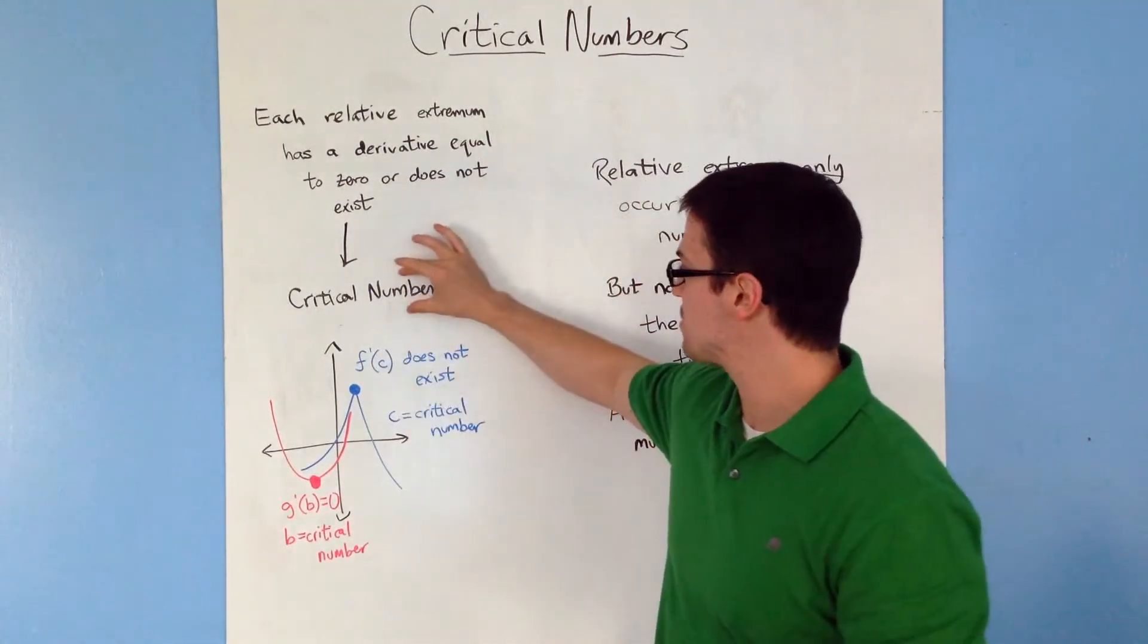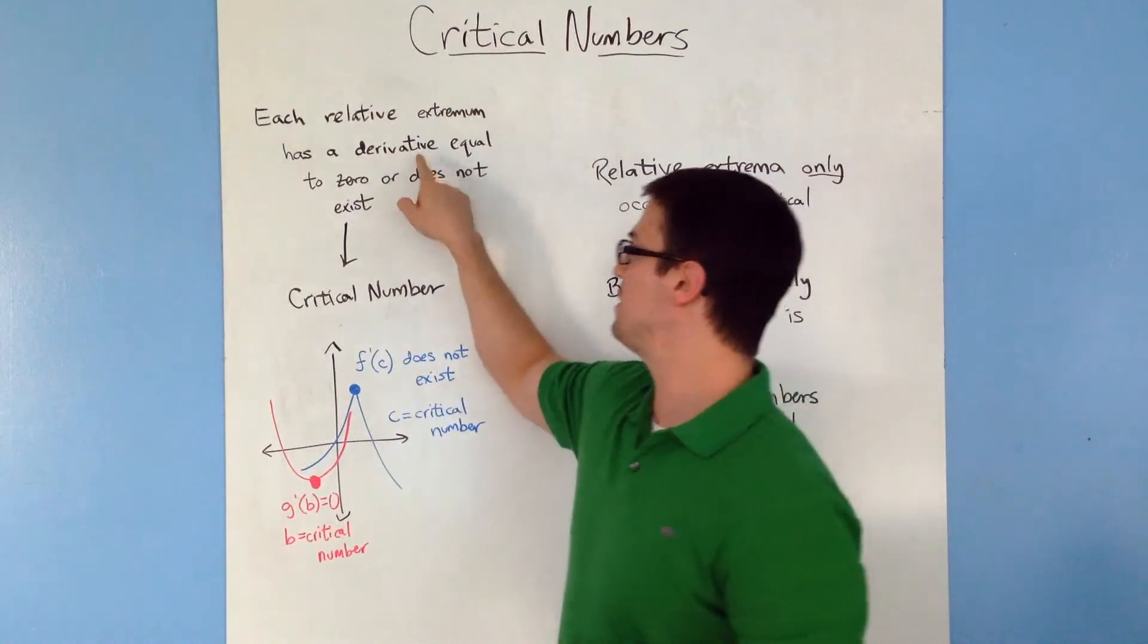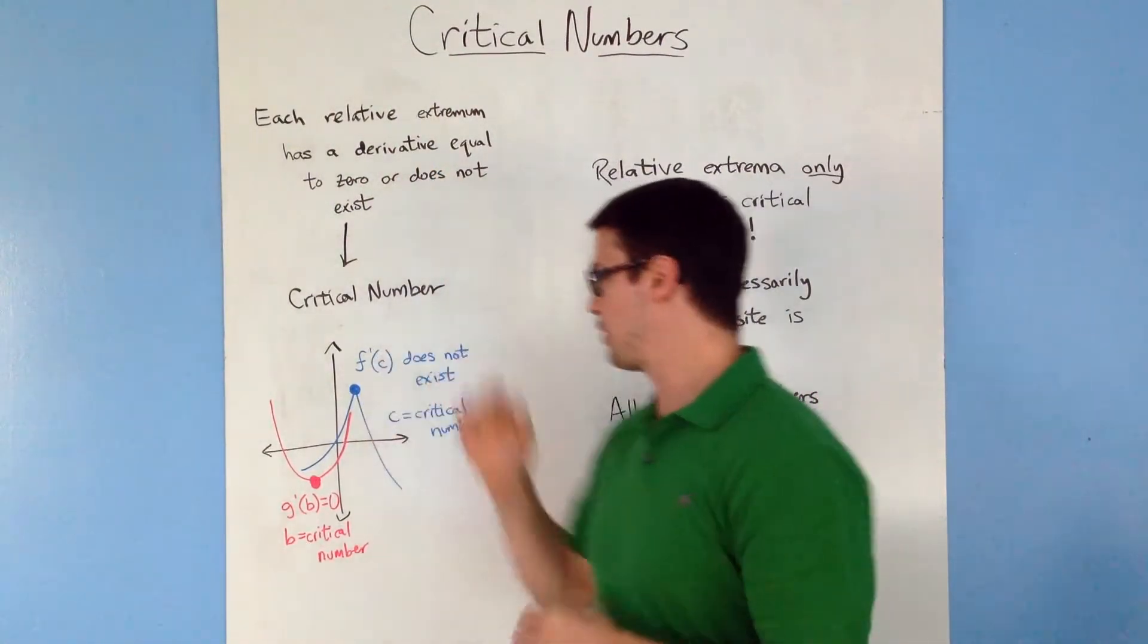So at that x value, that is the critical number. Whenever you have a relative extremum where the derivative is equal to zero or does not exist, then you have a critical number.